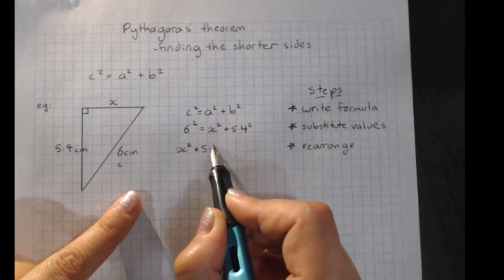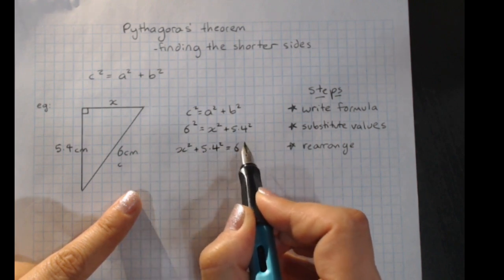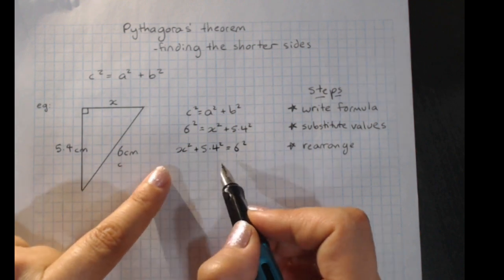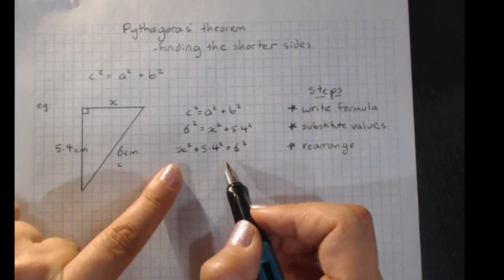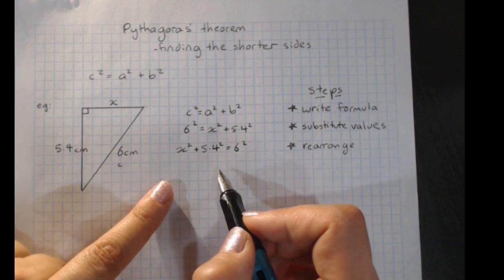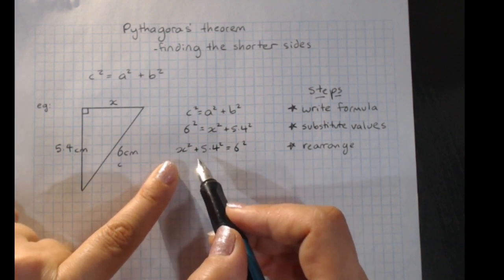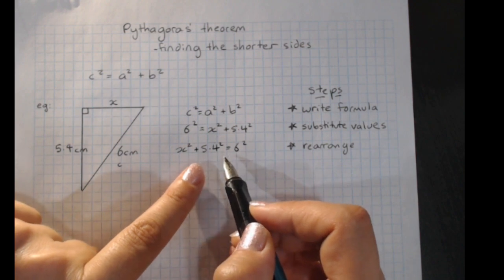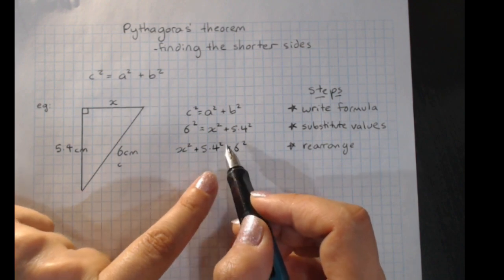x squared plus 5.4 squared equals 6 squared. Let's just get x on this side. You don't need to, but you'll probably feel happier if we end up with x on this side. Now to get x on its own, we've first got to get rid of this plus 5.4 squared.